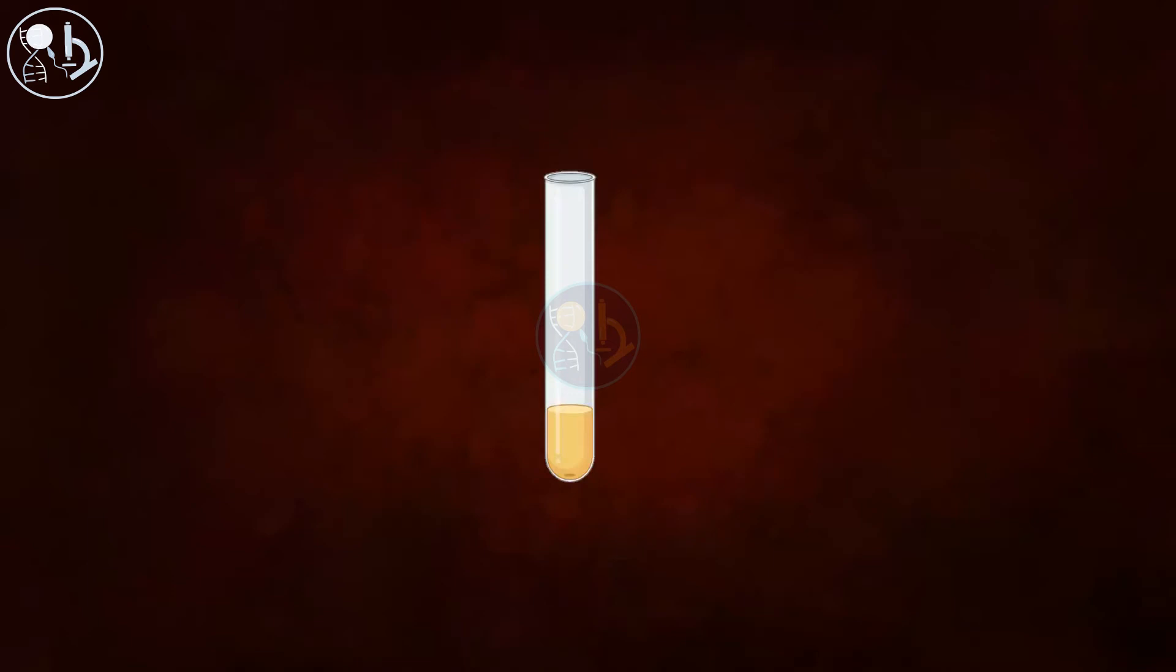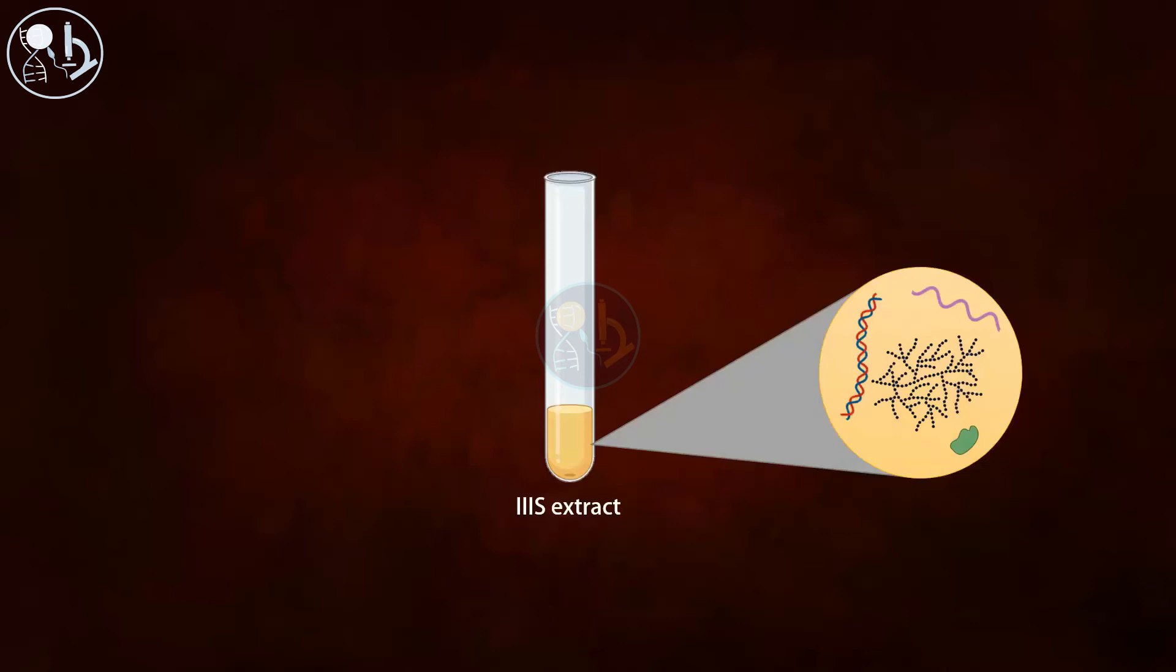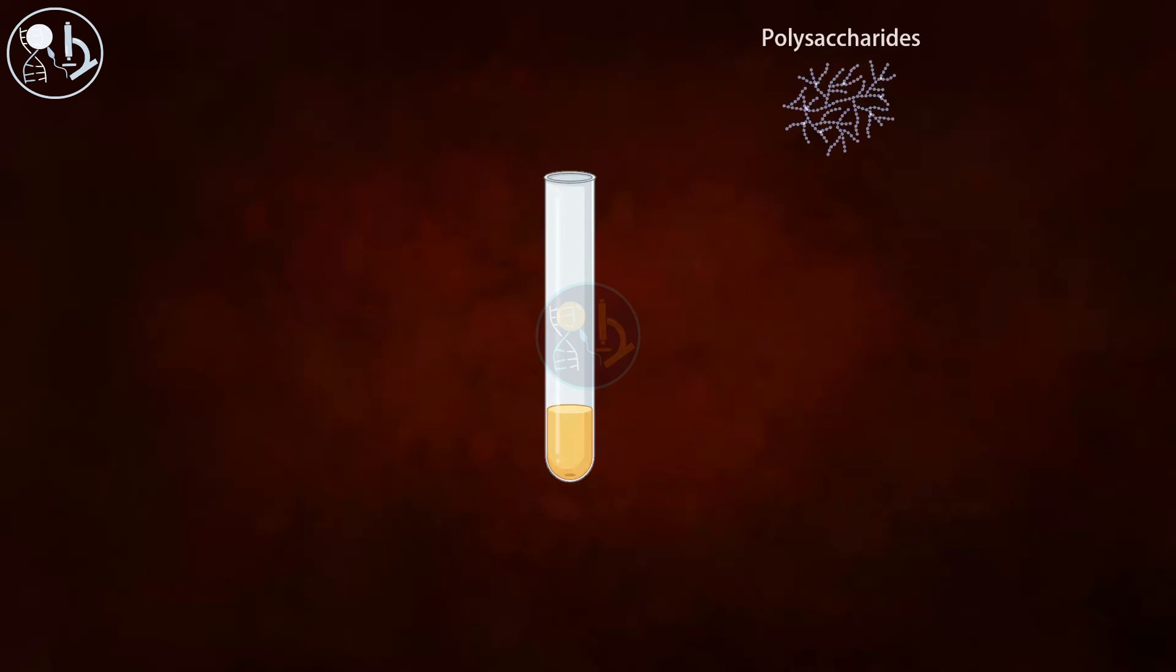They analyzed the components of 3S extract and found four components in it, and those are polysaccharides, proteins, RNA, and DNA. So it was evident that any one of these four components was responsible for transformation.